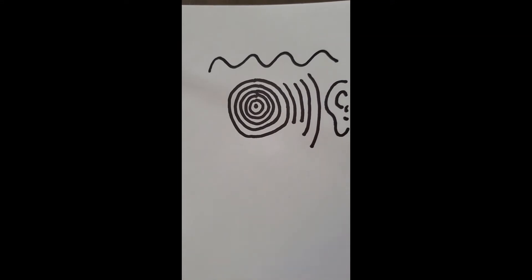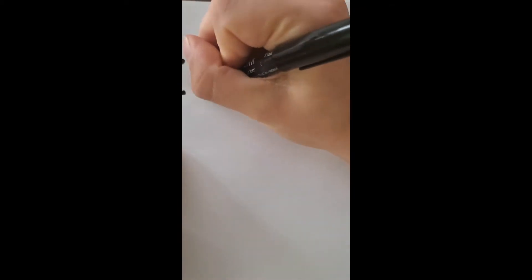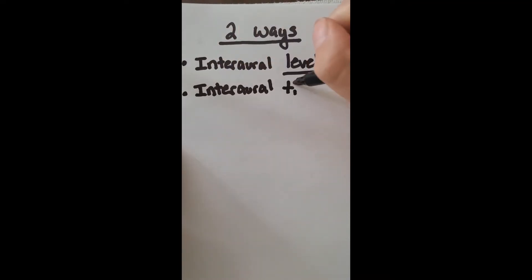There are two ways that we're able to localize sound. The first is interaural level difference. The second being interaural timing difference.